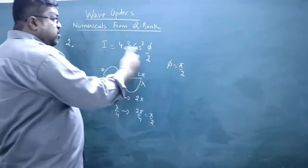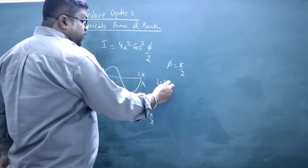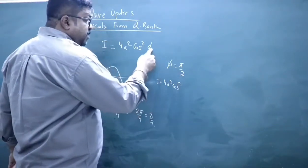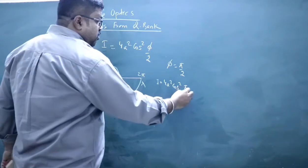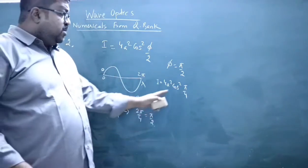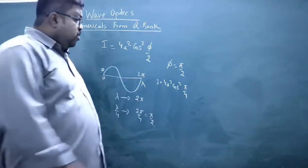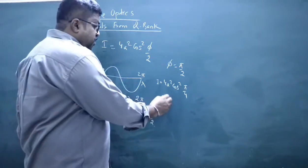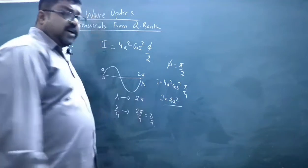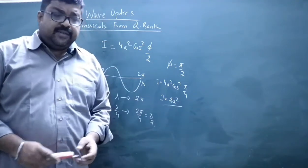With φ = π/2, the intensity is I = 4A²·cos²(π/4). Since cos²(π/4) = 1/2, the intensity is I = 2A². So I = 2A² is the final answer.